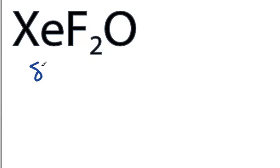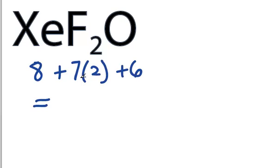On the periodic table, Xenon has eight valence electrons. Fluorine has seven, but we have two of those, plus six for oxygen. That gives us eight plus 14 plus six, 28 valence electrons.